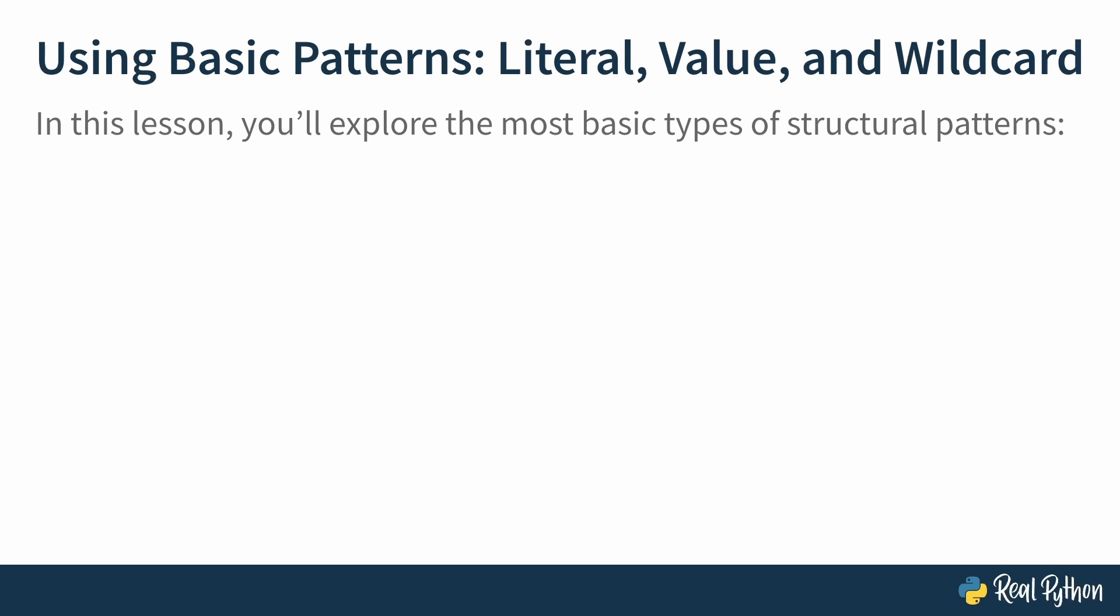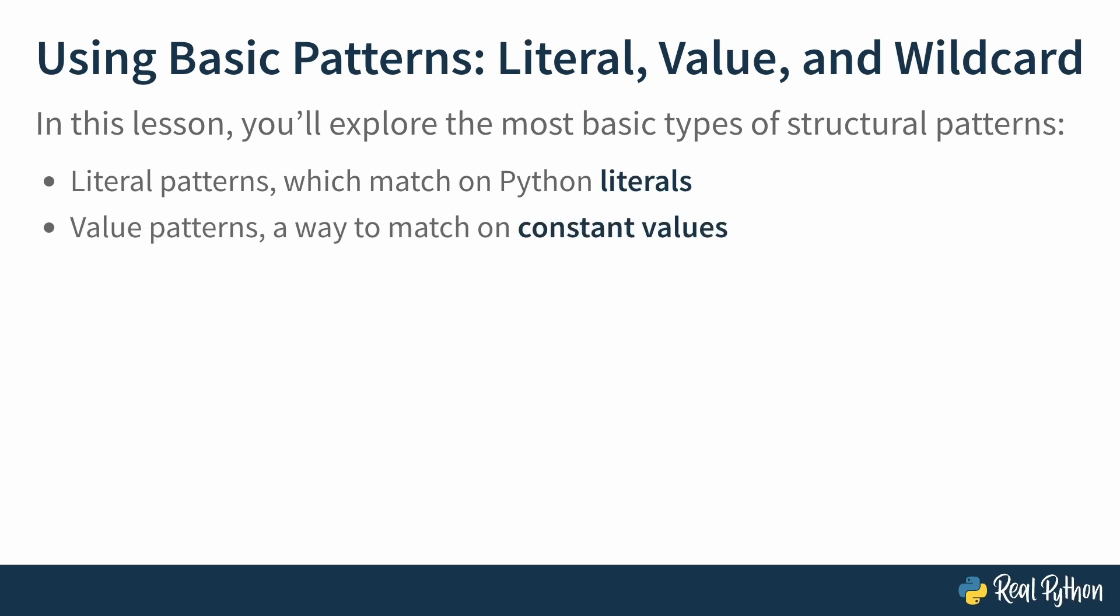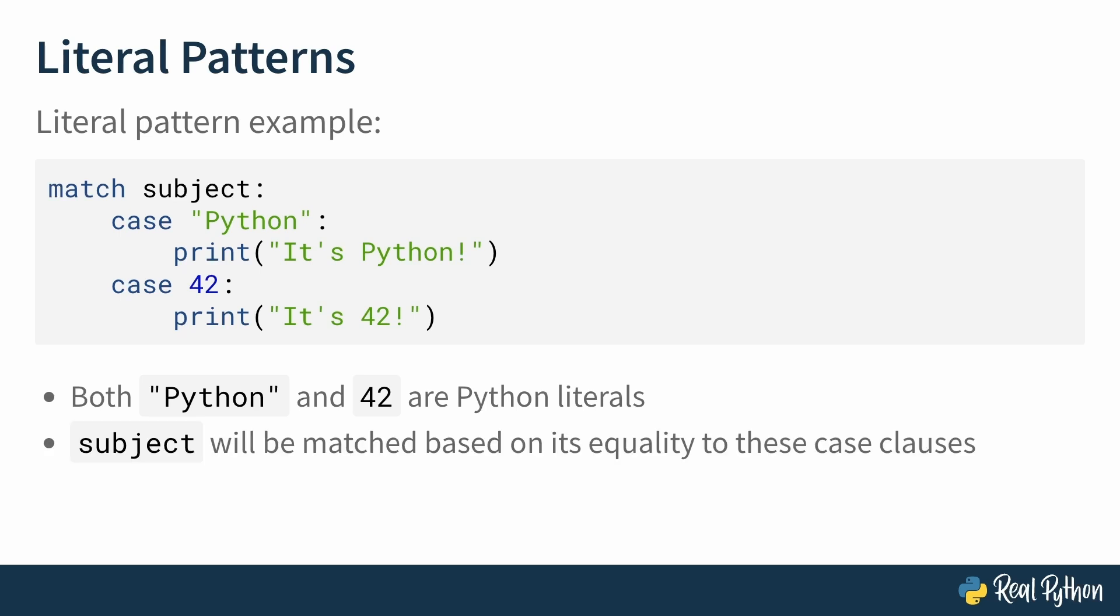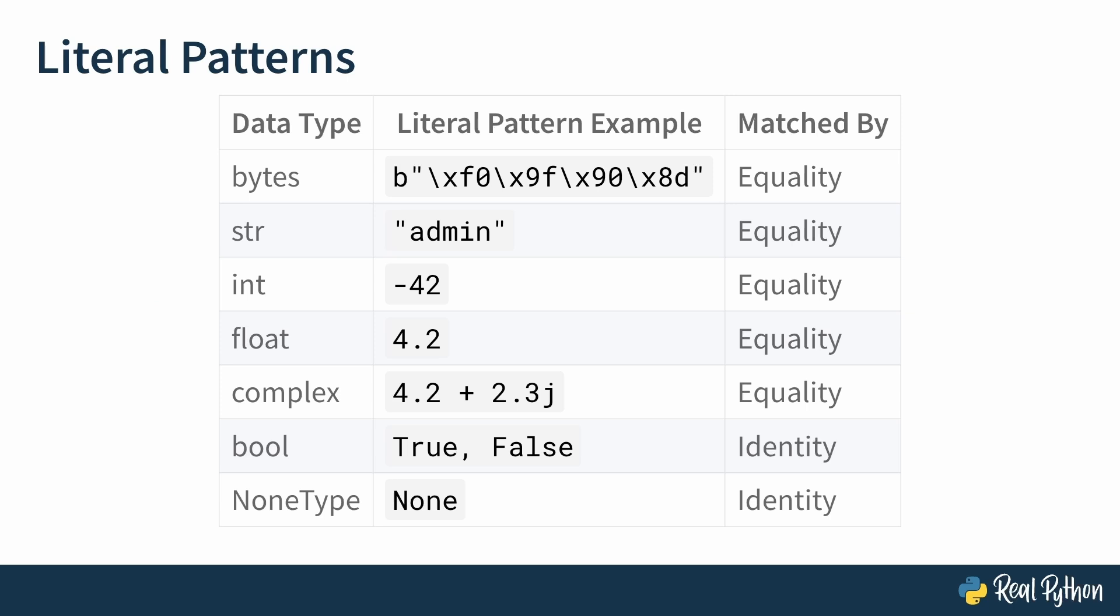In this lesson, you're going to explore the most basic types of structural patterns. Literal patterns, which match on Python literals, like string literals or integer literals. Value patterns, which are a way to match on constant values. And this is a little trickier than it sounds, trust me. And the wildcard pattern, which matches to any subject. Here's an example of a literal pattern. Match subject, case, the string Python. Print, it's Python. Case, the integer 42. Print, it's 42. In this example, both Python and 42 are Python literals. Subject will be matched based on its equality to these case clauses. Python has quite a few kinds of literals, actually.